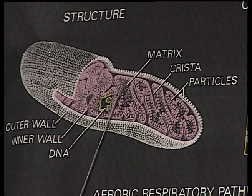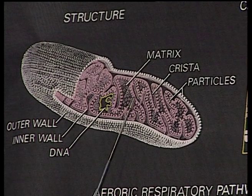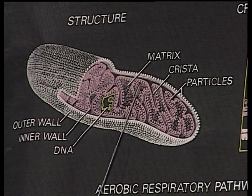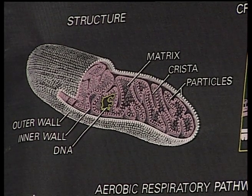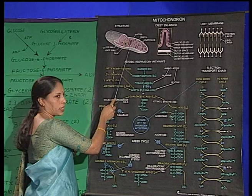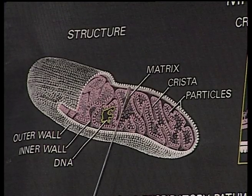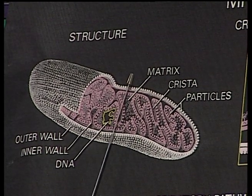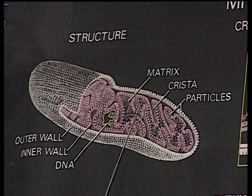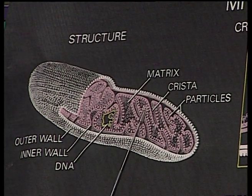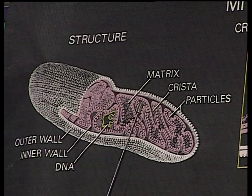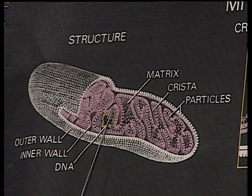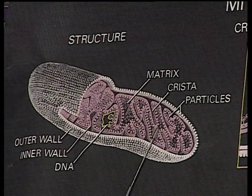Another membrane, the inner membrane, is present at a distance of 68 nanometers from the outer membrane. This inner membrane also has two sides: the C side (cytosol side) and the M side (matrix side). This inner membrane covers the lumen of the mitochondria, and this lumen is known as the matrix.